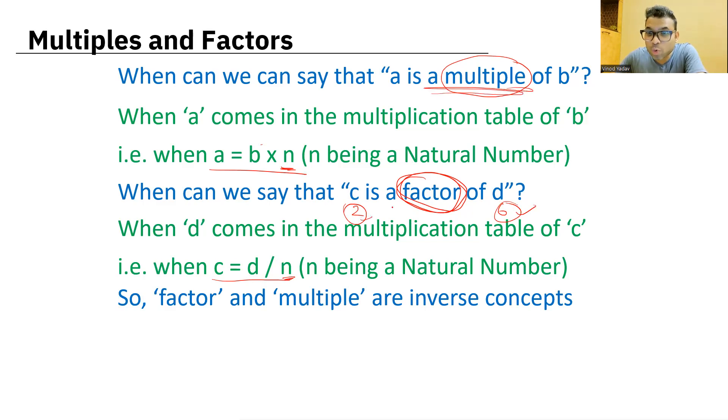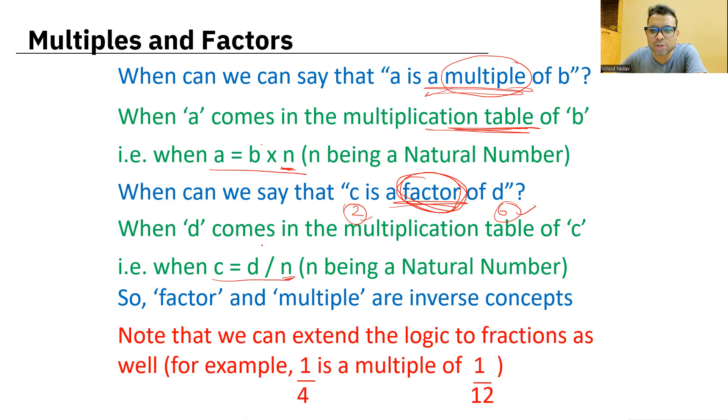So logically you can write like this: c is d divided by n, where n is of course a natural number. If you see these two thoughts, friends, we'll see that the factor and multiple are like inverse concepts. So two is a factor of six. At the same time, I can say six is a multiple of two. I hope the multiple and factor words are very, very clear. Another word for multiple is tables. We can also apply this logic to fractions as well. For example, one by 12 times three is one by four. Three is a natural number. So one by four is a multiple of one by twelve, friends.